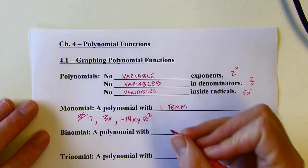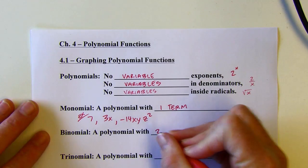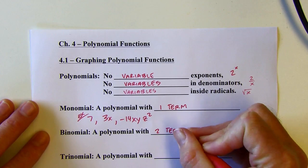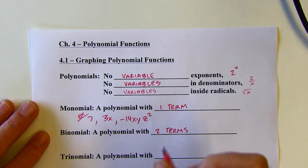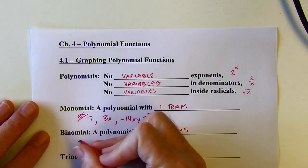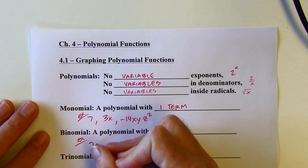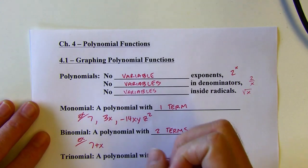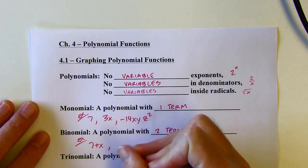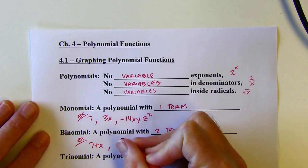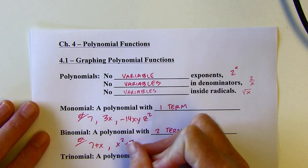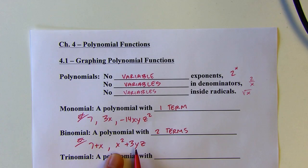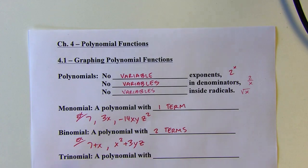A binomial has two terms, just like a bicycle has two tires. So it might look something like 7 plus x — that is a binomial. Or x squared plus 3yz is another binomial; it's got two different terms, two different clusters.